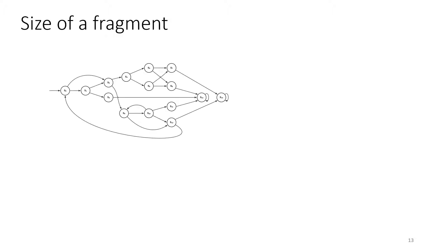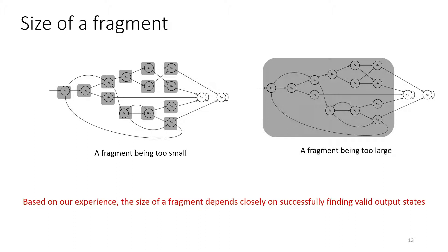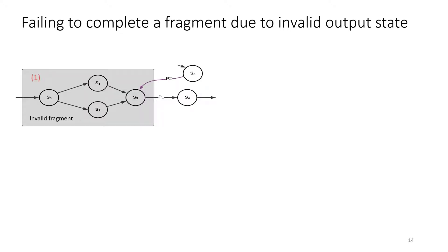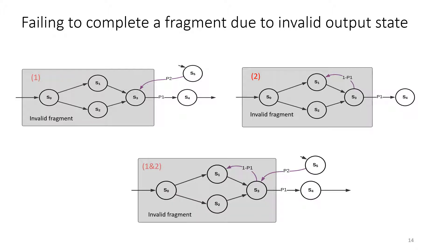A fragment being too small will result in a large abstract model that may not be handled by existing PMC. A fragment being too large has the opposite problem, as the PMC may not handle the big fragment. Based on our experience, the failure of FPMC was often due to a fragment being too large, because of unsuccessfully finding valid output states. There are three conditions where the formation of a fragment cannot be completed at that point.